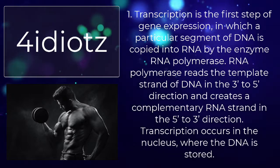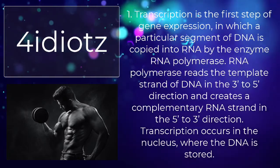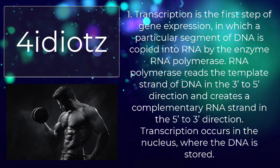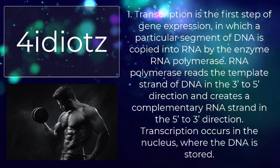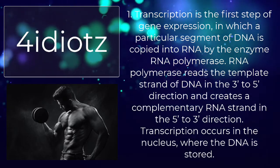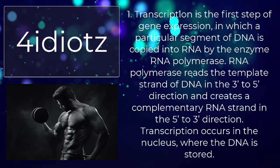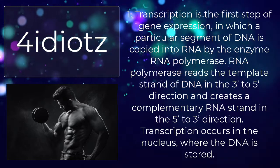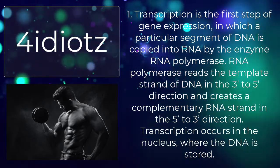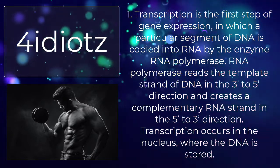Transcription is the first step of gene expression, in which a particular segment of DNA is copied into RNA by the enzyme RNA polymerase. RNA polymerase reads the template strand of DNA in the three-to-five direction and creates a complementary RNA strand in the five-to-three direction. Transcription occurs in the nucleus, where the DNA is stored.